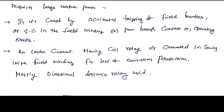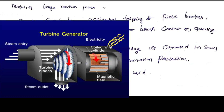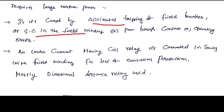The causes of loss of excitation are: accidental tripping of the DC supply, failure of the field breaker, poor brush contact — because DC supply is given through brushes for excitation — or operating errors.